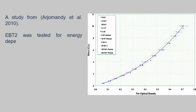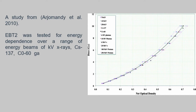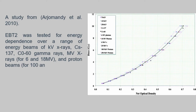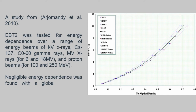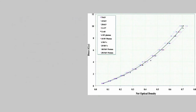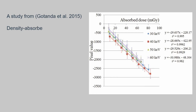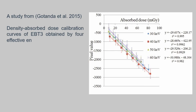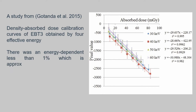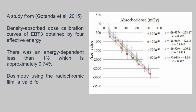A study from Arjomandy et al. in 2010 tested EBT2 for energy dependence over a range of energy beams including kV X-rays, Cesium-137, Cobalt-60 gamma rays, MV X-rays for 6 and 18 MV, and proton beams for 100 and 250 MV. Negligible energy dependence was found with a global spread of plus or minus 4.5% for all energy beams. Another study from Getanda et al. in 2015 obtained CT absorbed dose calibration curves for EBT3 at four effective energies: 30, 40, 50, and 60 kV. Energy dependence was less than 1%, approximately 0.74%, concluding that dosimetry using radiochromic film is valid for effective energy in the diagnostic range.